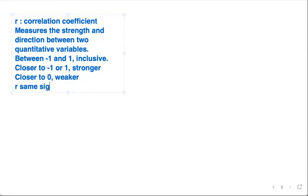And r has the same sign as the slope. So if there's a positive relationship, the slope and r are positive. If there's a negative relationship, the slope and r are negative. But r is not equal to the slope. Remember that.